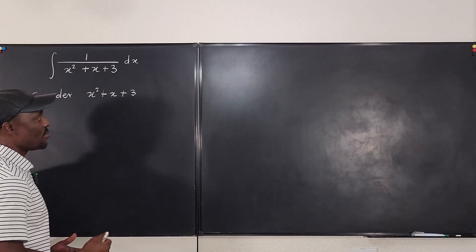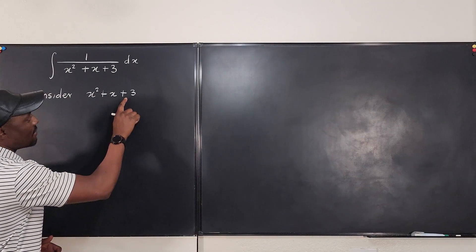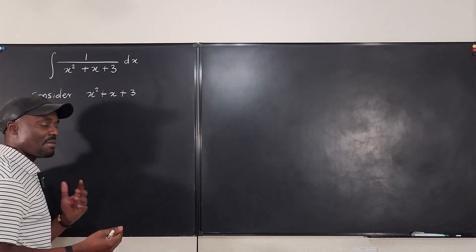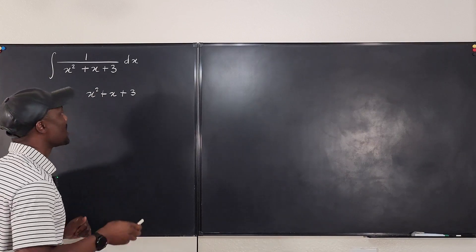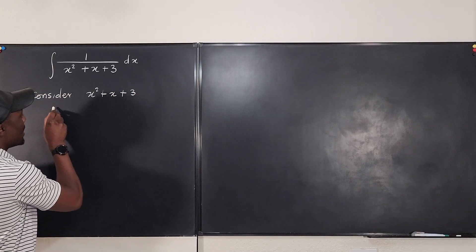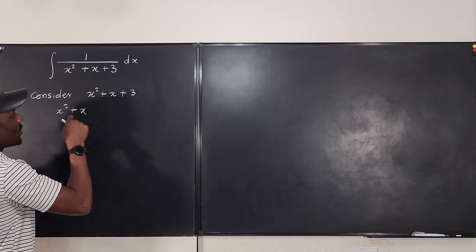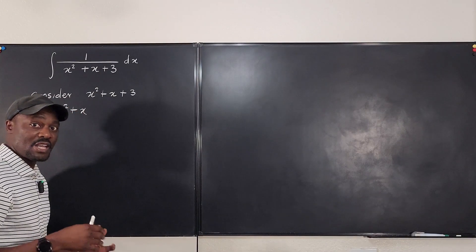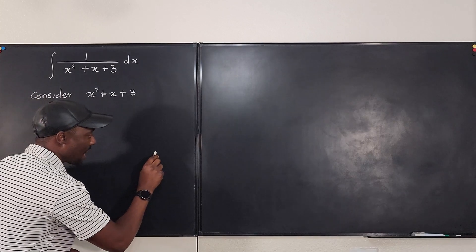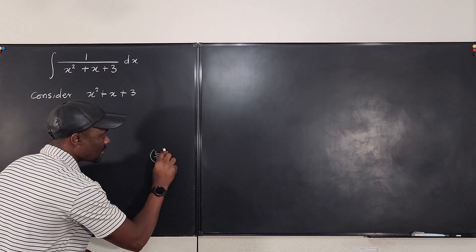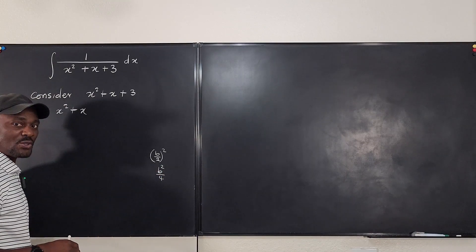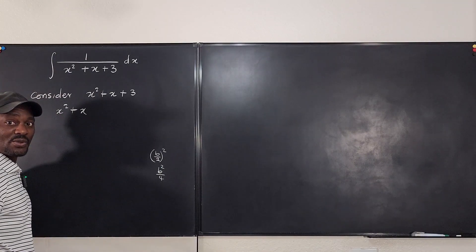This expression is a rectangle — we want to make it a square. Because the leading coefficient is one, we're happy. I'm going to isolate the three and ask: what do I need to add to x squared plus x so it becomes a perfect square? What you need to add is the square of half of b — you always need to add b over two squared, which is the same thing as b squared over four. That's what you always add to any expression that looks like this.